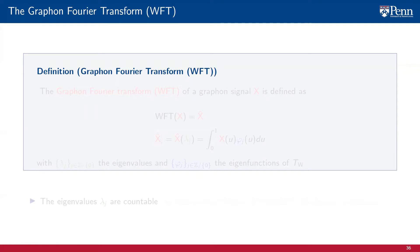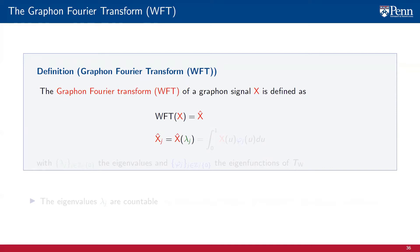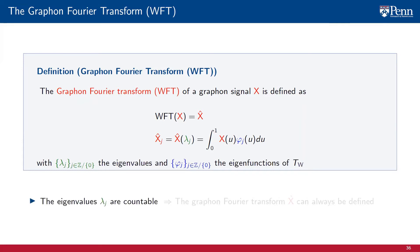Given the motivation for the definition of a graphon Fourier transform, we now proceed to define that concept formally. The graphon Fourier transform, or WFT, of a graphon signal x can be defined as another graphon signal x-hat, defined over the operator's basis, where each component x-hat_j corresponds to the component of the signal associated to a particular frequency defined by the eigenvalue lambda_j, and can be computed as the integral from 0 to 1 of the product between the original graphon signal x and the corresponding eigenfunction phi_j — with lambda_j the eigenvalues and phi_j the eigenfunctions of the associated graphon shift operator TW. Since the eigenvalues and eigenfunctions are countable, the graphon Fourier transform x-hat can always be defined.